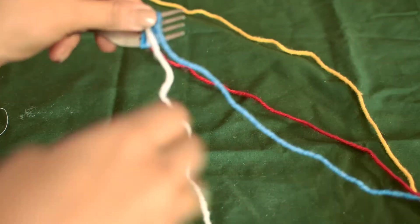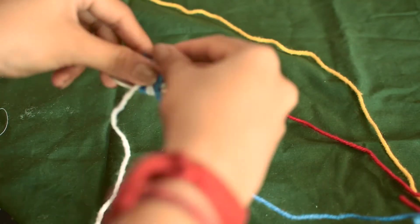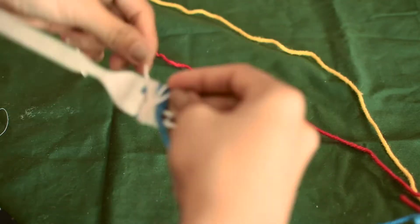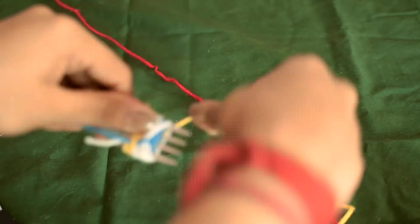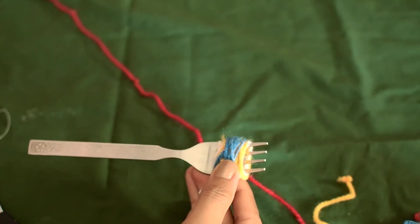Then I'm going ahead with my second color, followed by yellow and red. Just loop it around. Now this pom-pom is going to be slightly bigger than the previous one because I'll be using a lot of thread.